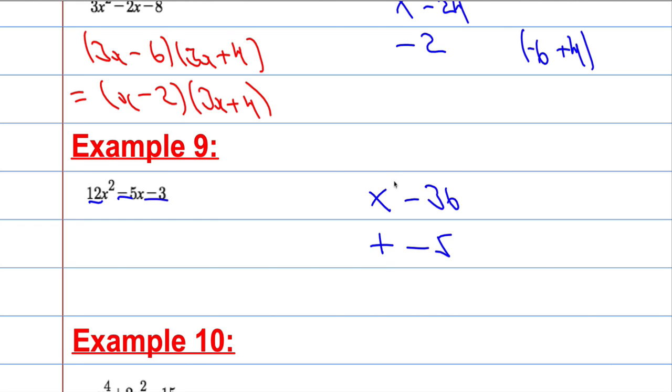So they've got to add to make minus 5 and multiply to make minus 36. So let me think. Numbers, 9 and 4. 9 times 4 is 36. And then if I wanted to make minus 5 by adding these numbers, if I had a minus 9 and a plus 4, that would give me minus 5. So I'm going to use that to help me.